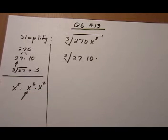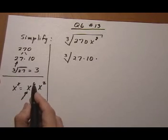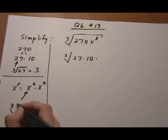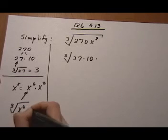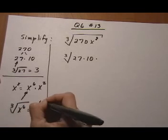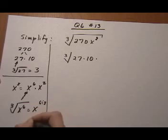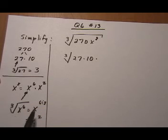this right here, x to the sixth, is a perfect cube. Because remember, when you have a variable with an exponent, the cube root divides the exponent by 3. So the cube root of x to the sixth is x to the sixth divided by 3, or x squared.